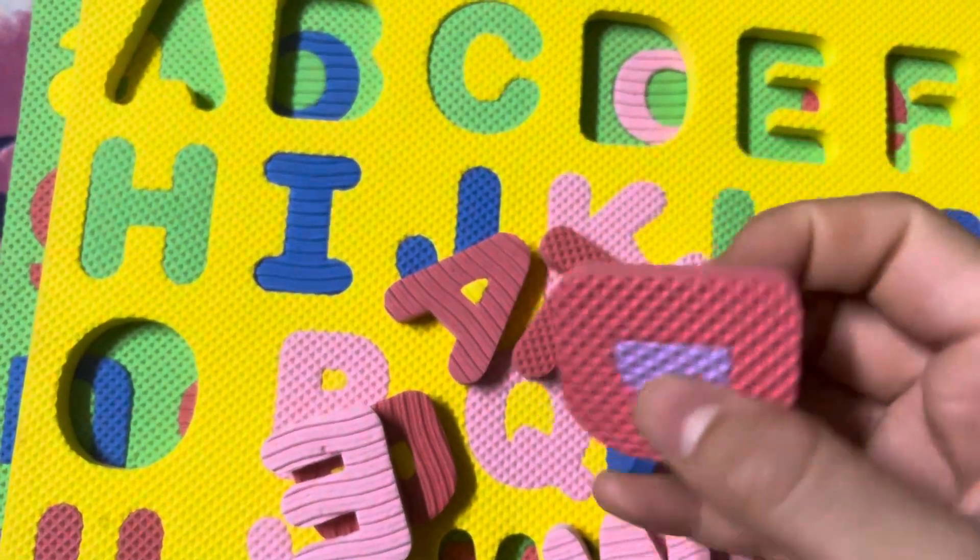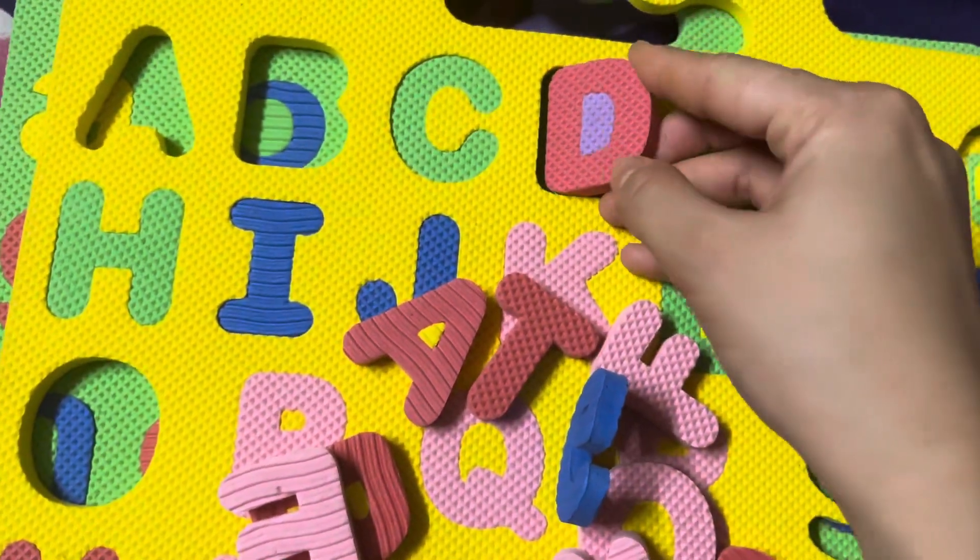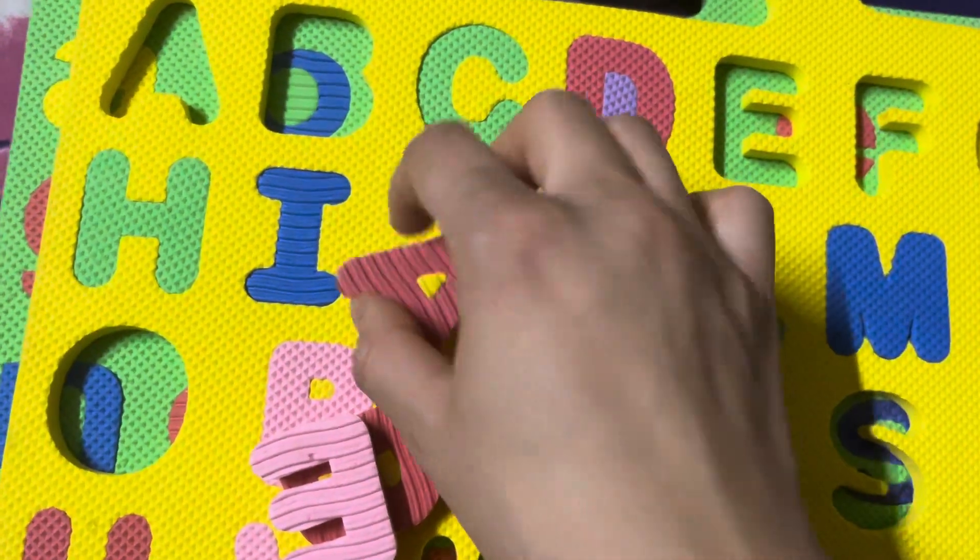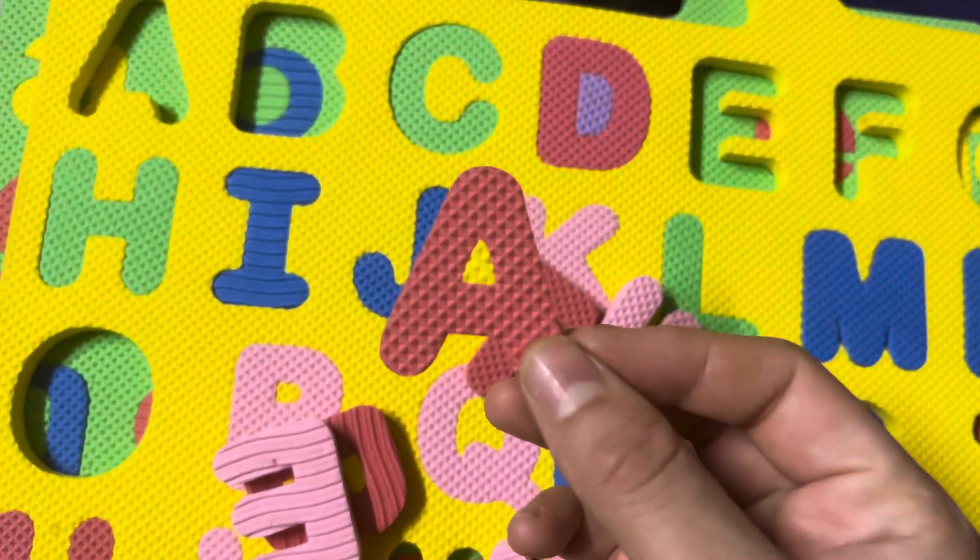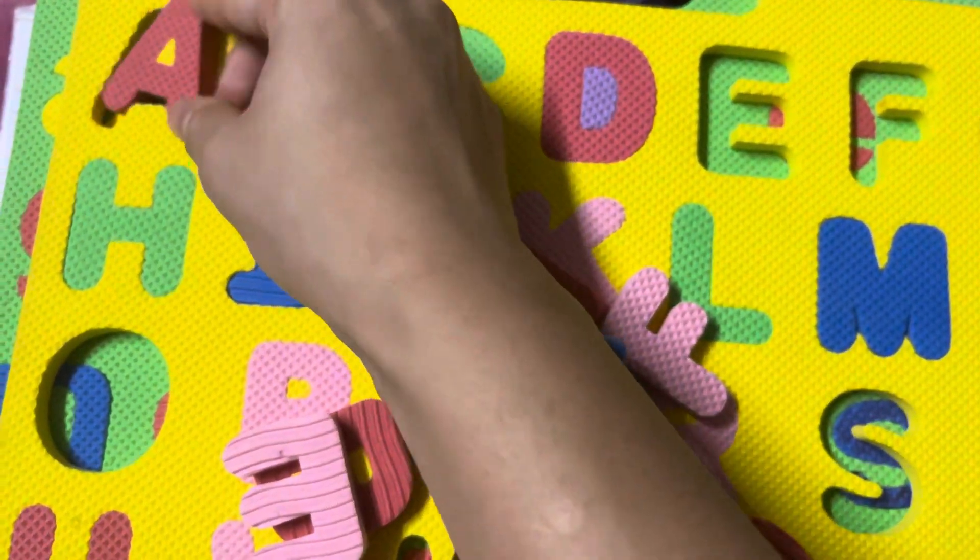The first one is letter D, D for dog. Next letter is letter A, A for apple.